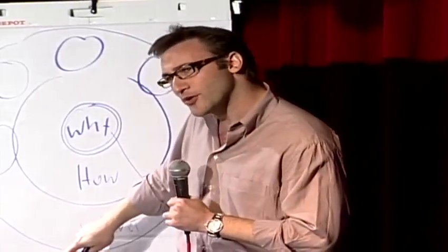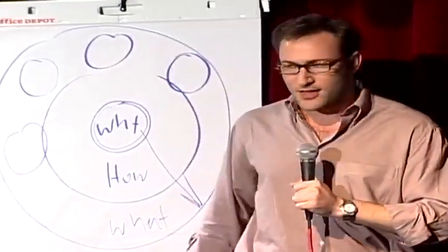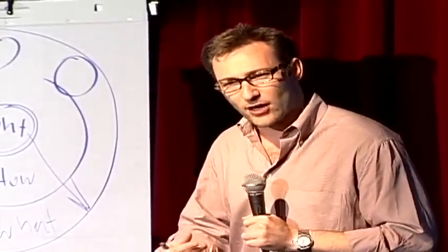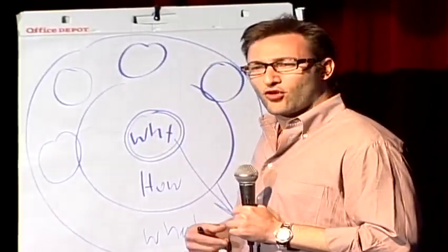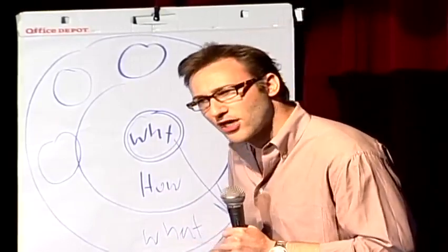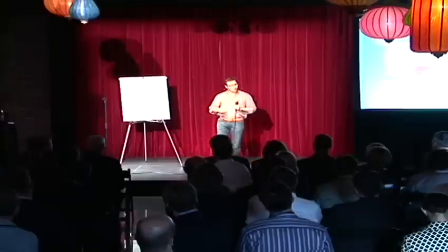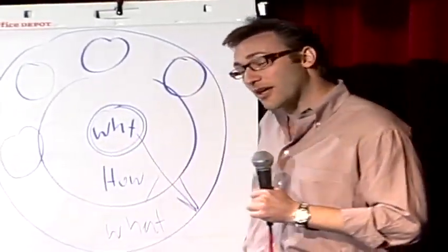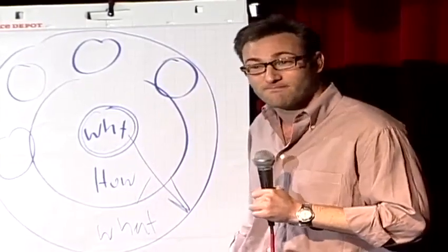Our newest brain, our homo sapien brain, our neocortex, corresponds with the what level. The neocortex is responsible for all of our rational and analytical thought and language. The middle two sections make up our limbic brains. And our limbic brains are responsible for all of our feelings, like trust and loyalty. It's also responsible for all human behavior, all decision making, and it has no capacity for language. In other words, when we communicate from the outside in, yes, people can understand vast amounts of complicated information, like features and benefits and facts and figures. It just doesn't drive behavior.